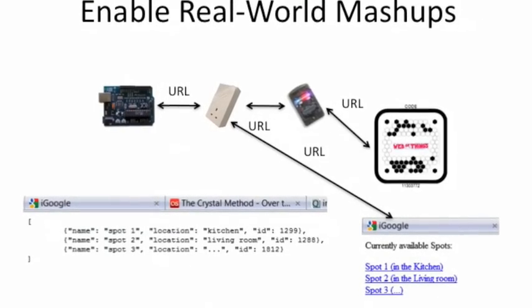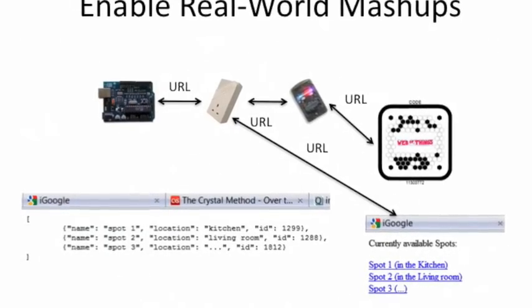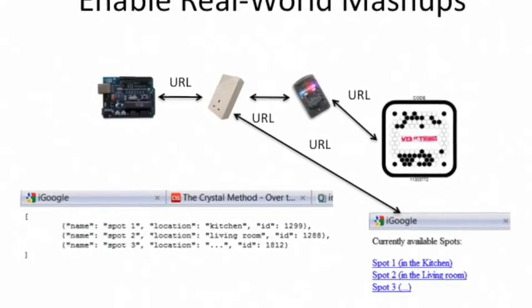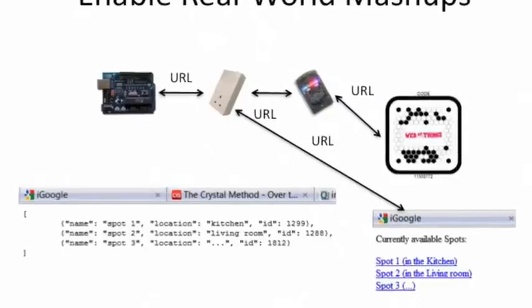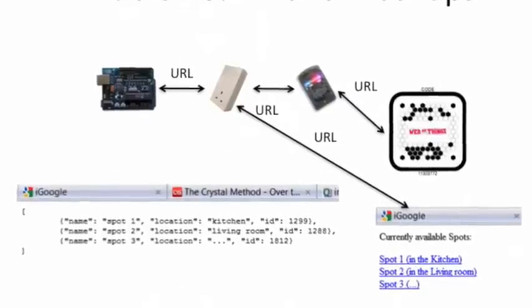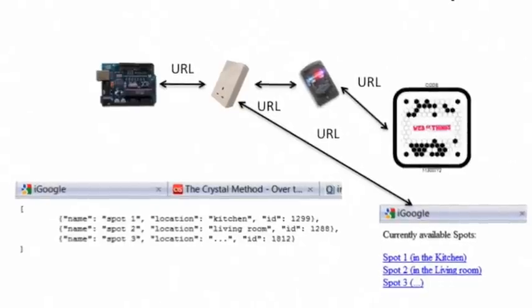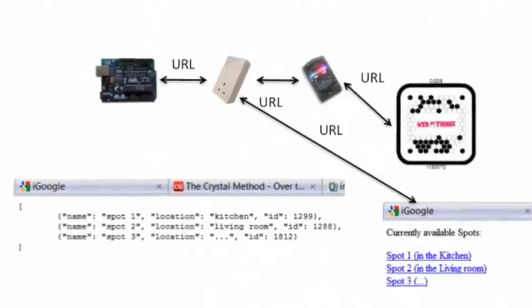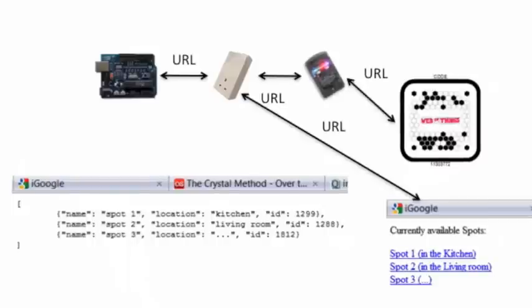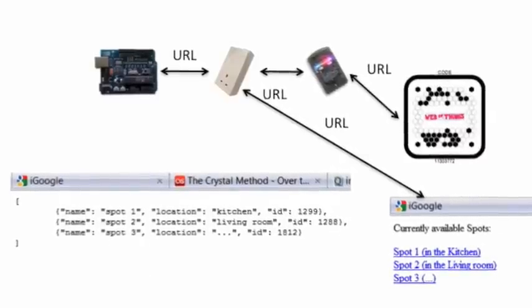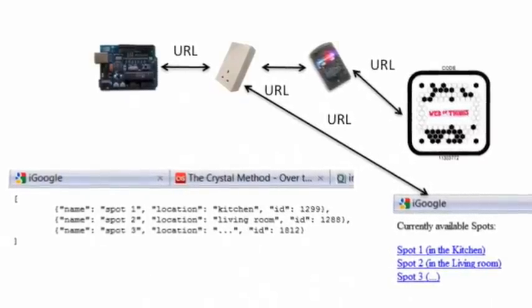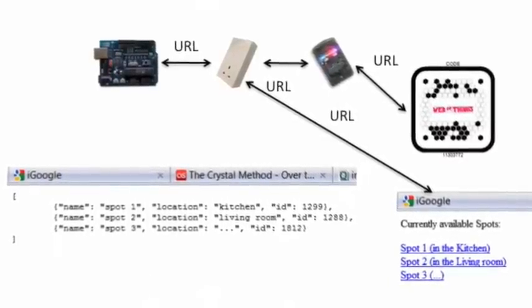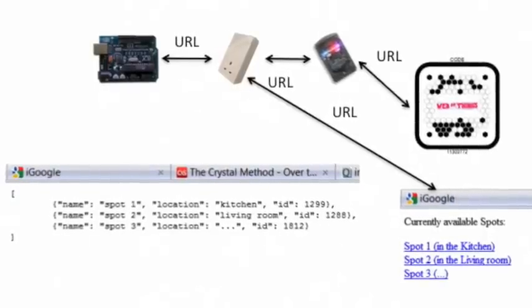The strength of the Web of Things approach is that all smart things are now fully integrated to the web. They become directly browsable, searchable and their services can be tested from any browser, on a computer or a mobile phone. As a consequence, smart things can be composed like we compose websites in Web 2.0 mashups.